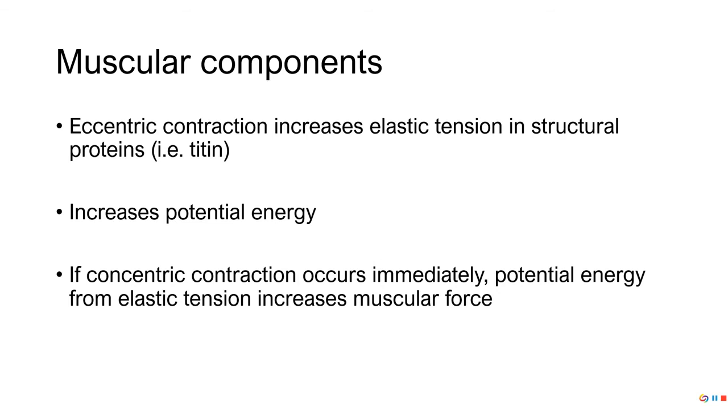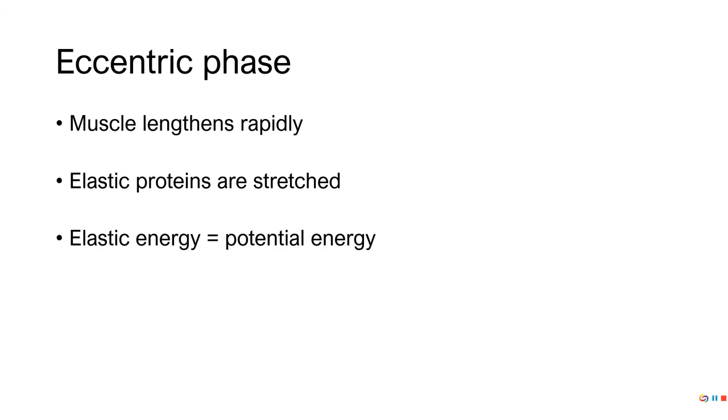We've got three phases. First, the eccentric phase where we're lengthening our muscle rapidly. Just think about the counter movement that you do before the vertical jump. This stretches out those elastic proteins like titin. This causes us to take that elastic energy and it's stored as potential energy. We activate that muscle spindle which reduces the eccentric contraction.